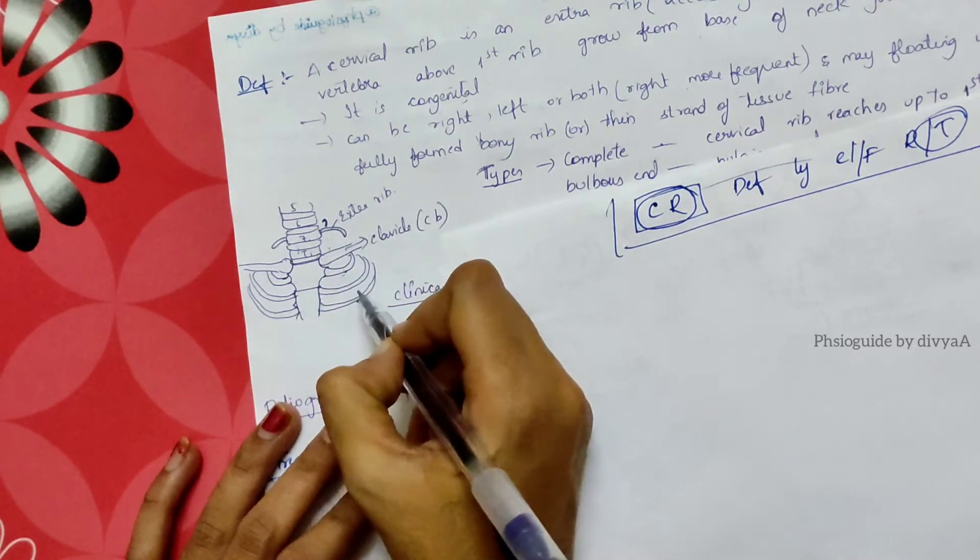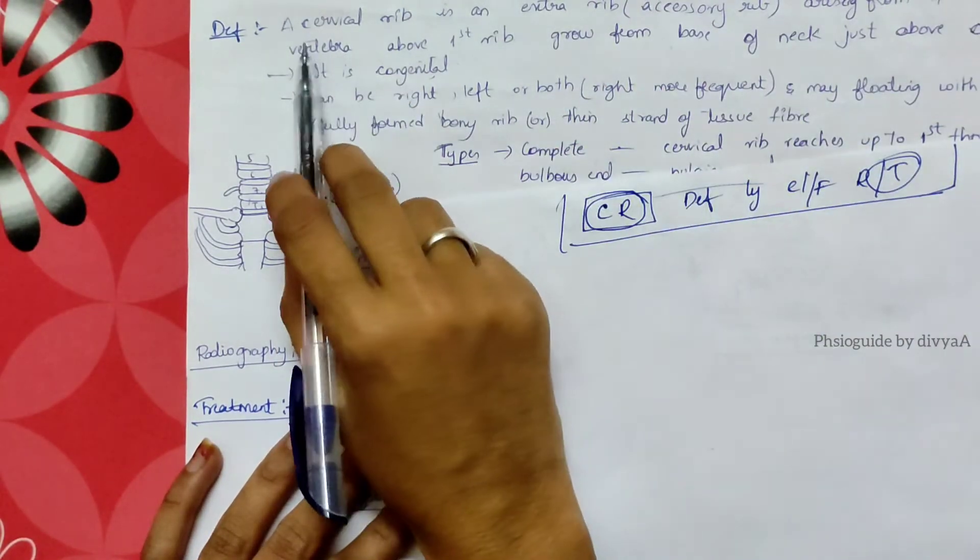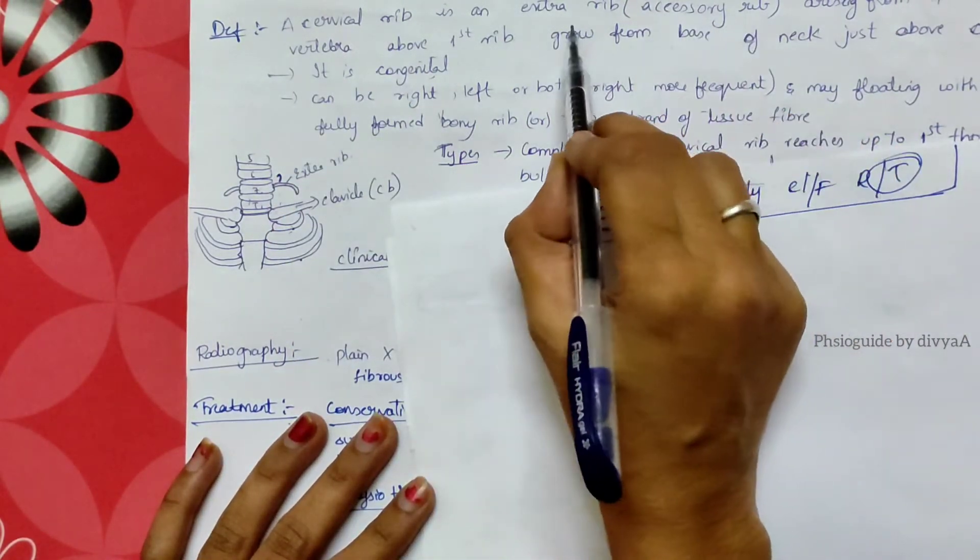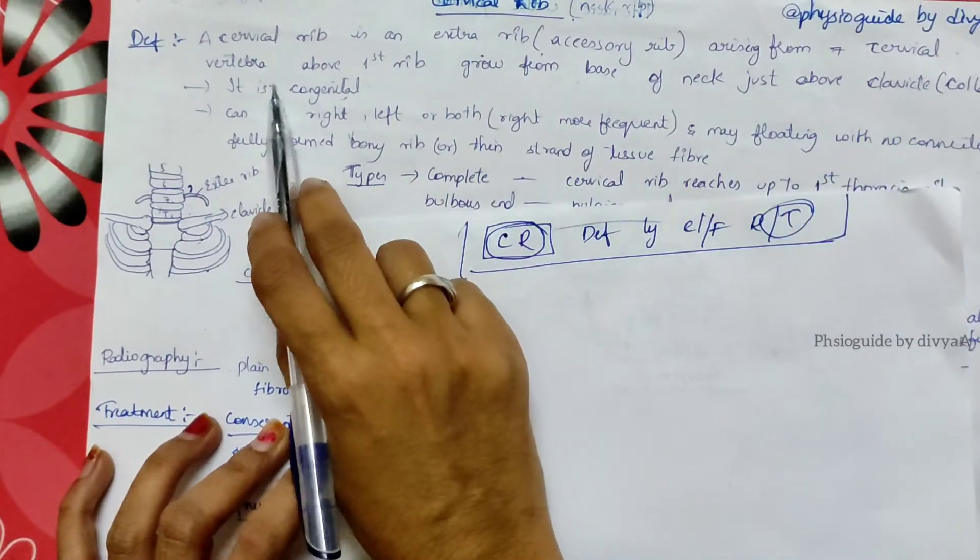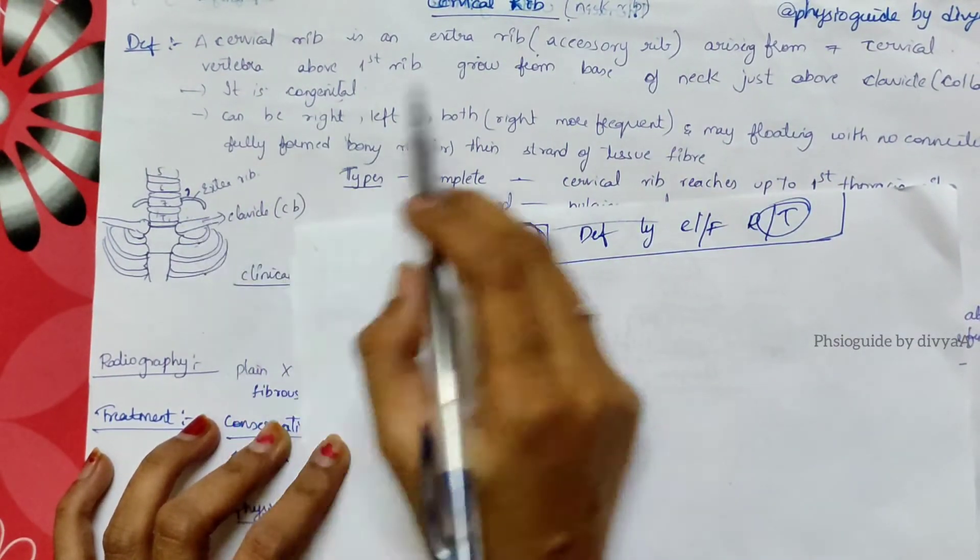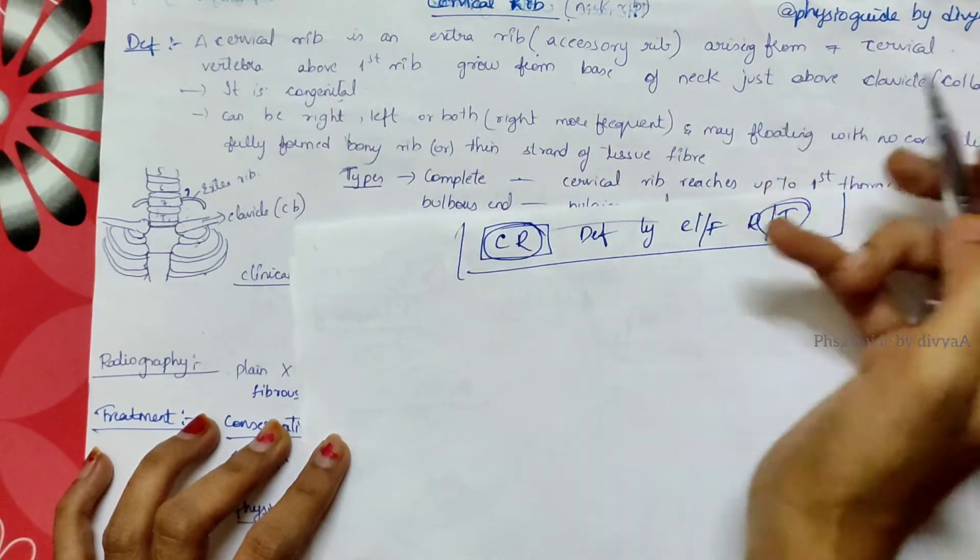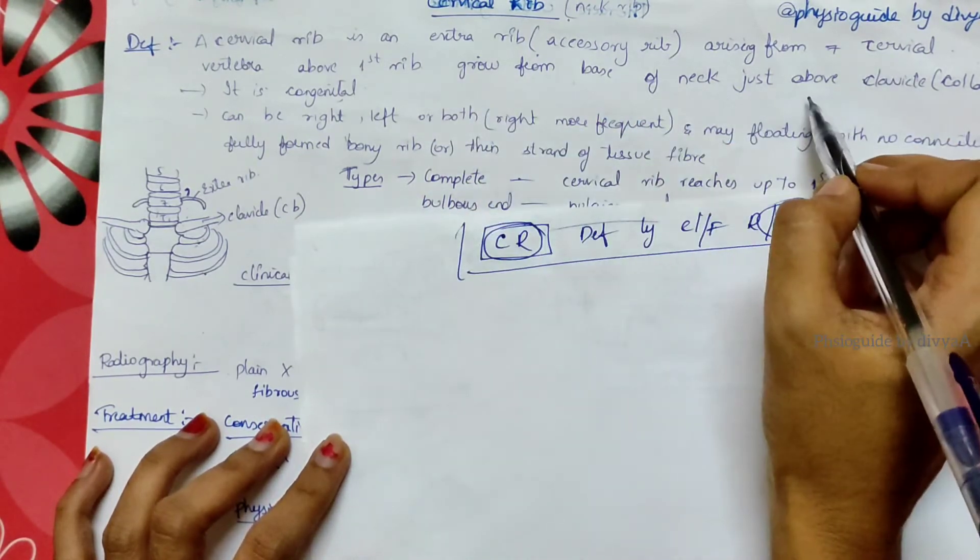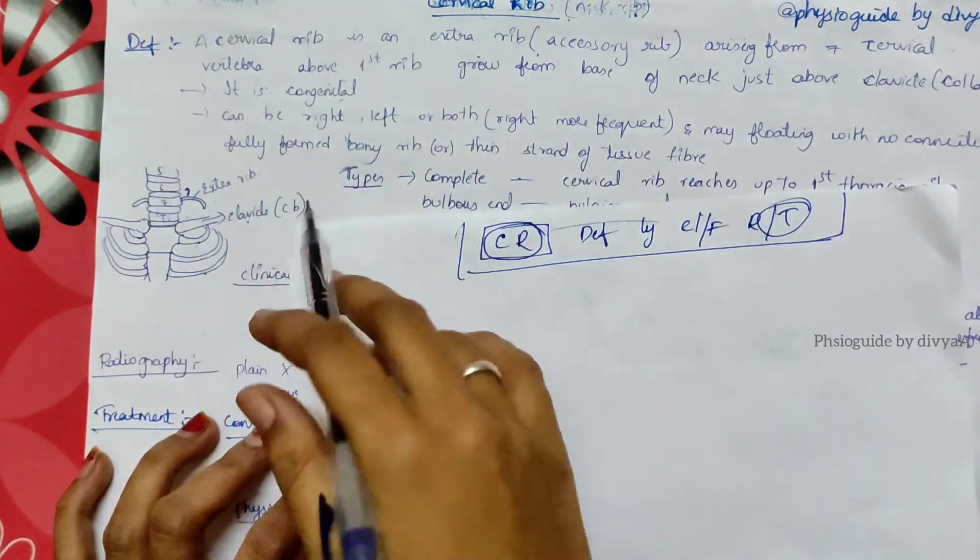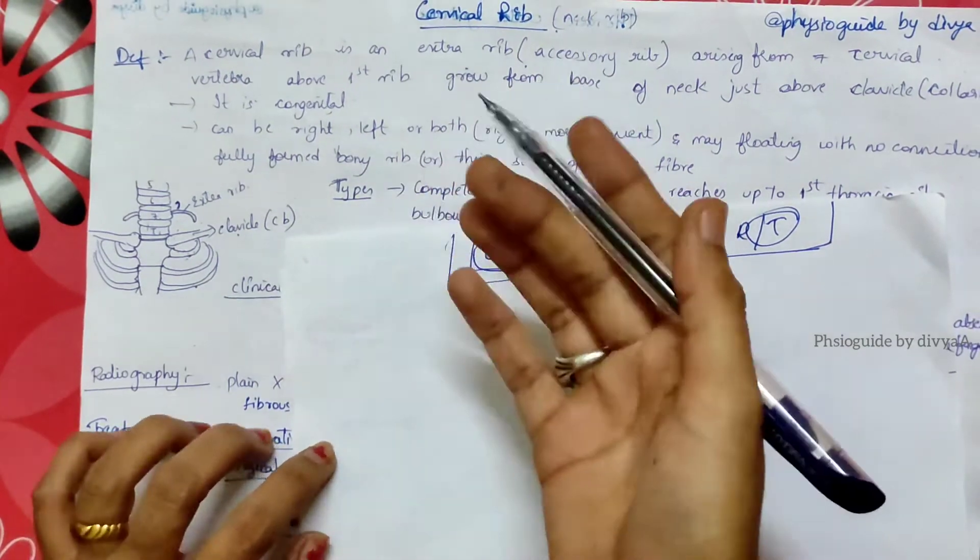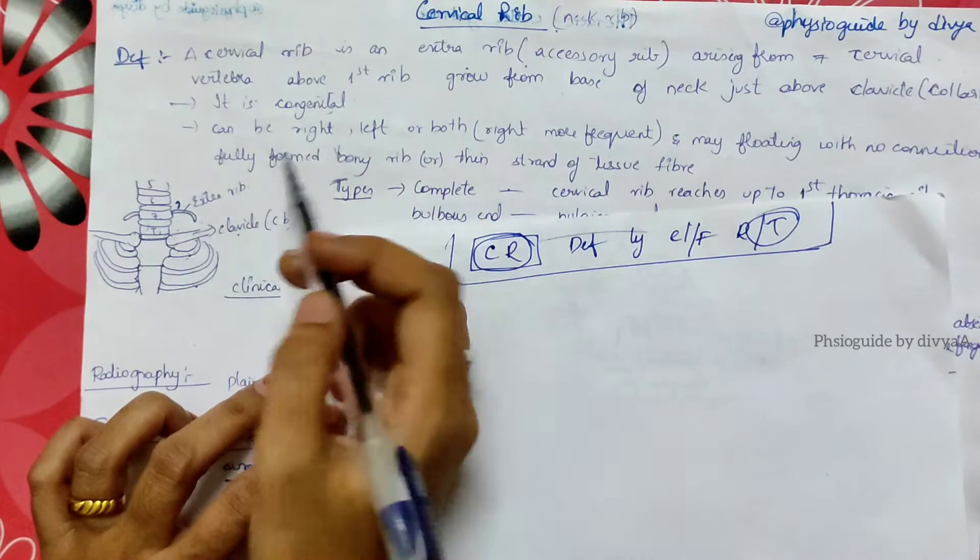I'm going to read now. Cervical rib is an accessory rib, an extra rib arising from the seventh cervical vertebra above the first rib. First rib grows from the base of the neck just above the clavicle, also known as the collar bone. It's congenital, meaning we can see this from the birth of the child onwards.